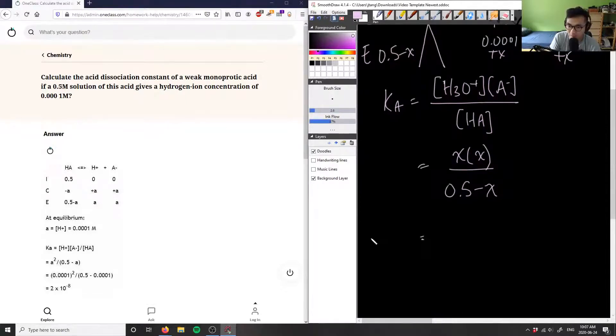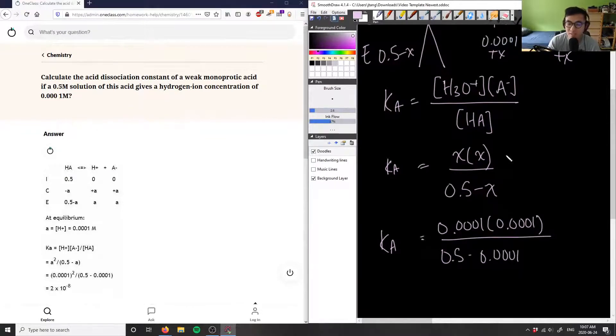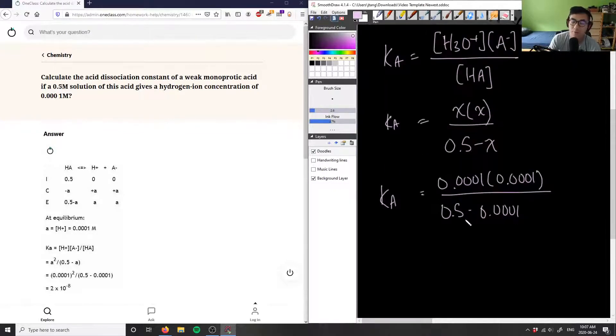Divided by 0.5 minus 0.0001. And this here, after I do this math, will give us our equilibrium expression for Ka. So all I'm going to have to do is simply some calculator work. So let me type that in the calculator for you.